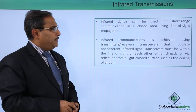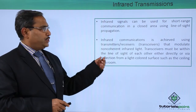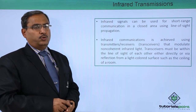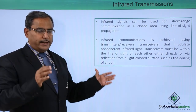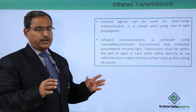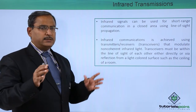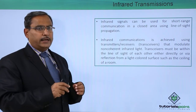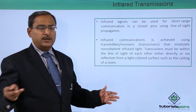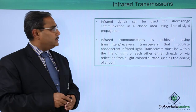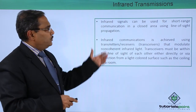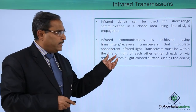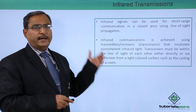Infrared signals can be used for short range communication in a closed area using line of sight propagation. From the sender to the receiver, the infrared must be coming in the line of sight either directly or through some reflections on some light-coloured objects.